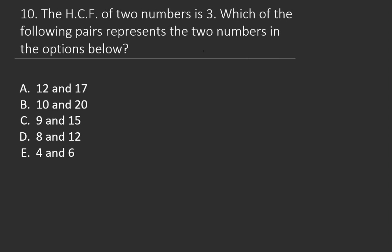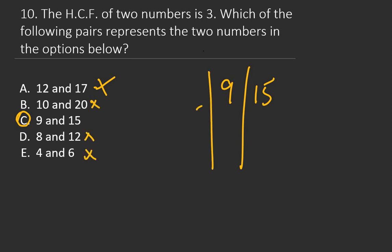Question 10: The HCF of two numbers is 3. Which of the following pairs represents the two numbers? We need a number that can divide all options. Looking at option C: 9 and 15 can both be divided by 3. 9 ÷ 3 = 3 and 15 ÷ 3 = 5, and nothing else divides both, so the HCF is 3. The right answer is C.